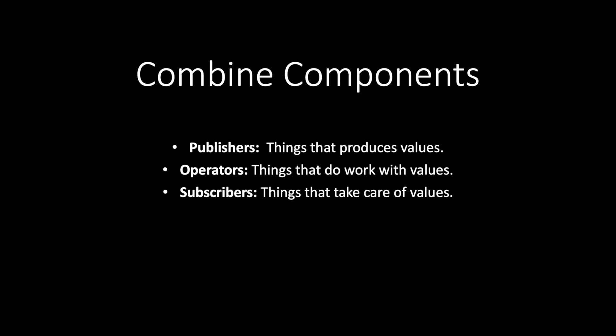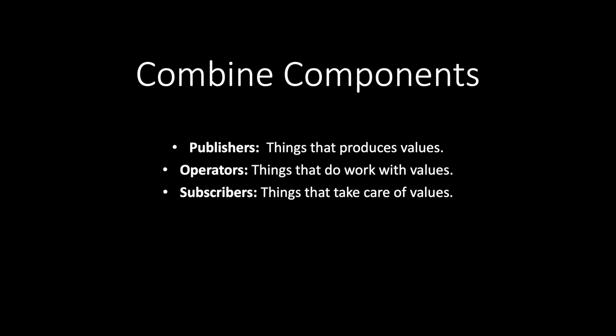Next, subscribers. Publishers and operators are pointless unless someone is listening to their published values. A Subscriber is also a protocol. It has two associated types: input and failure. Subscribers can receive events, completions, or failures from publishers. Think of it like a radio tower publishing events and all the radios listening to those events — the central tower is the publisher and all the radios are subscribers receiving what the tower publishes.